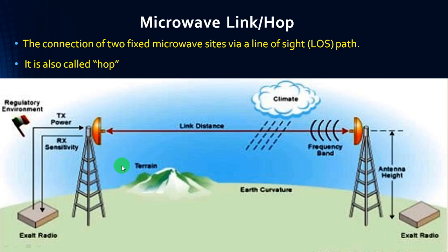This is an example picture. Here, Site A and Site B are shown without any obstacles. The signals are transmitted from one site to the other, which is also called line of sight.